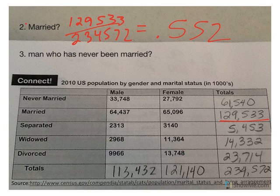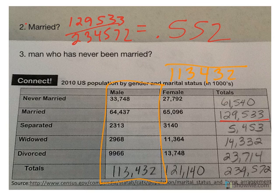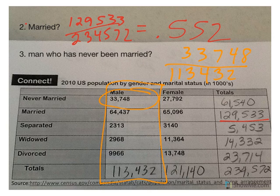Number three: probability of selecting a man who has never been married. Now we are dealing with only men, so our denominator is going to be 113,432. Never married is 33,748 over the total of the men, and my decimal is approximately .298. Make sure that you're changing your denominator to go with the men.